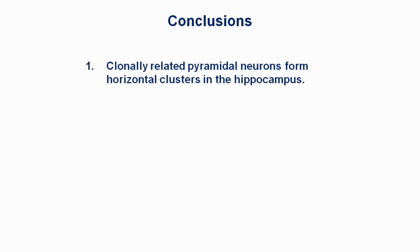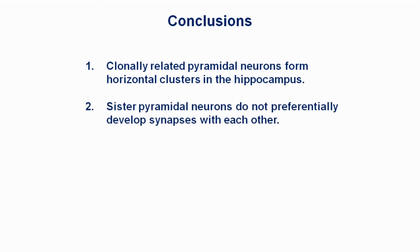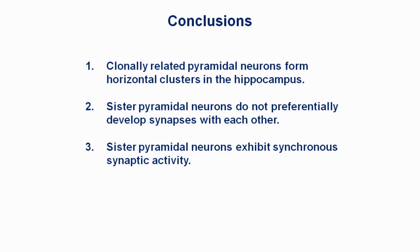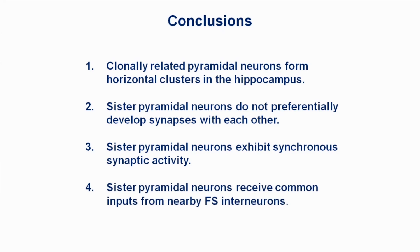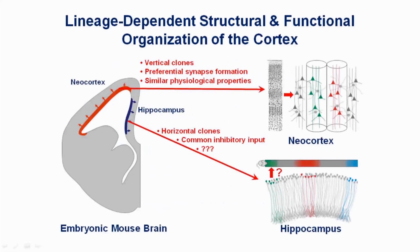In summary, we found that sister pyramidal cells in the hippocampus form horizontal clusters in the stratum pyramidale without preferentially developing synaptic connections, but with more synchronized spontaneous activity, which is probably due to common inhibitory synaptic input from nearby fast-spiking interneurons. Our study demonstrates that the lineage relationship of excitatory neurons has fundamental influences on the structural and functional organization of the cortex, with different parts having different manifestations.